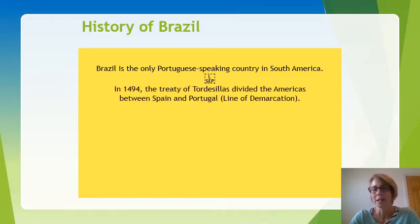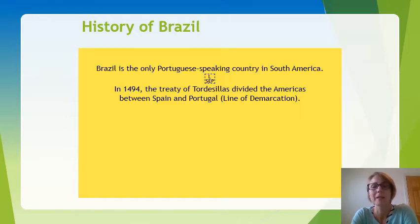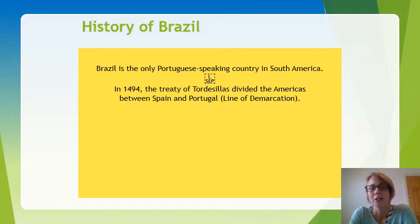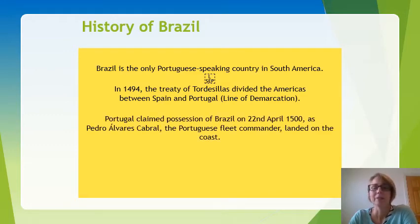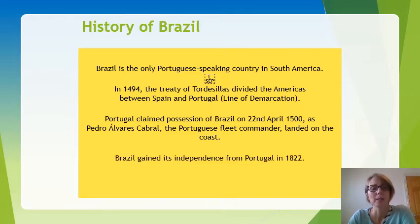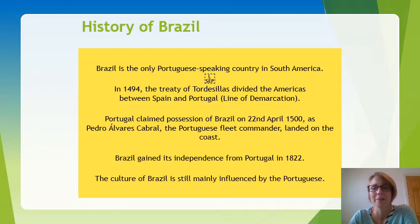Explorers from Europe — from Spain and Portugal — came over in their ships and wanted to settle in the Americas. They came up with a treaty, the Line of Demarcation, in 1494 that agreed to divide the Americas between Spain and Portugal. In 1500, Portugal claimed possession of Brazil — the Portuguese fleet commander was Pedro Álvares Cabral. Brazil became an independent country in 1822, though its culture is still mainly influenced by the Portuguese.